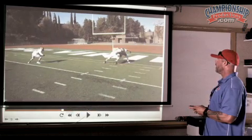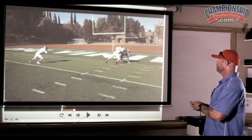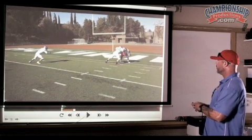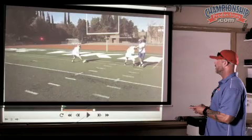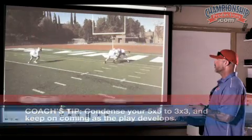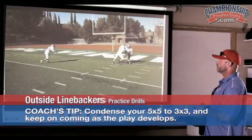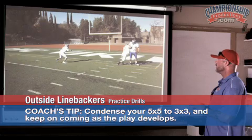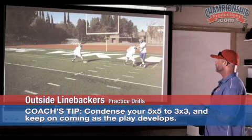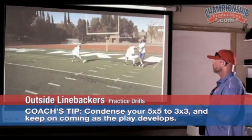If we get a down block, that means the defensive end is condensing inside, so we have to condense inside. We're going to start condensing our 5x5 to about a 3x3 and keep on coming as the play develops.